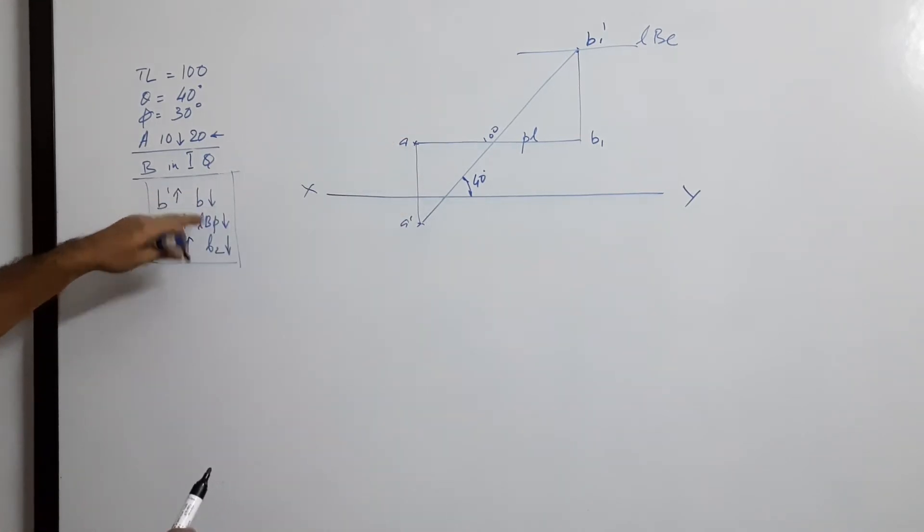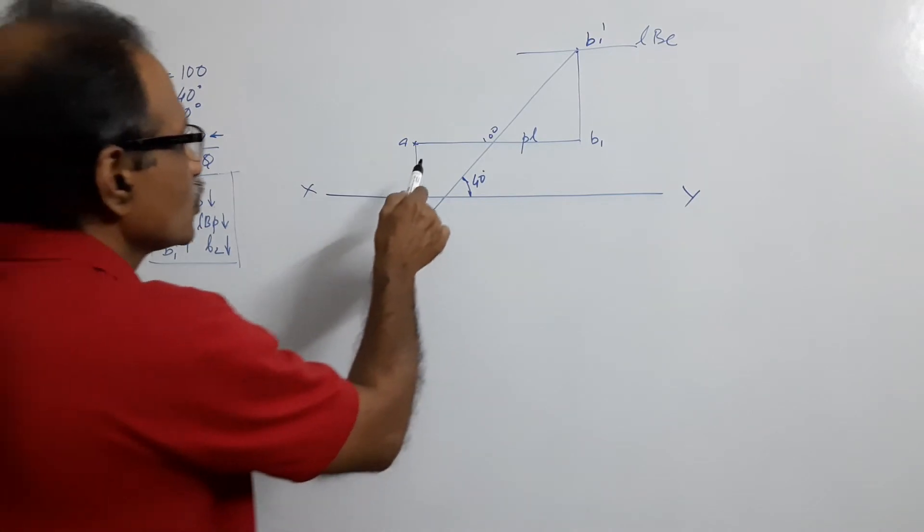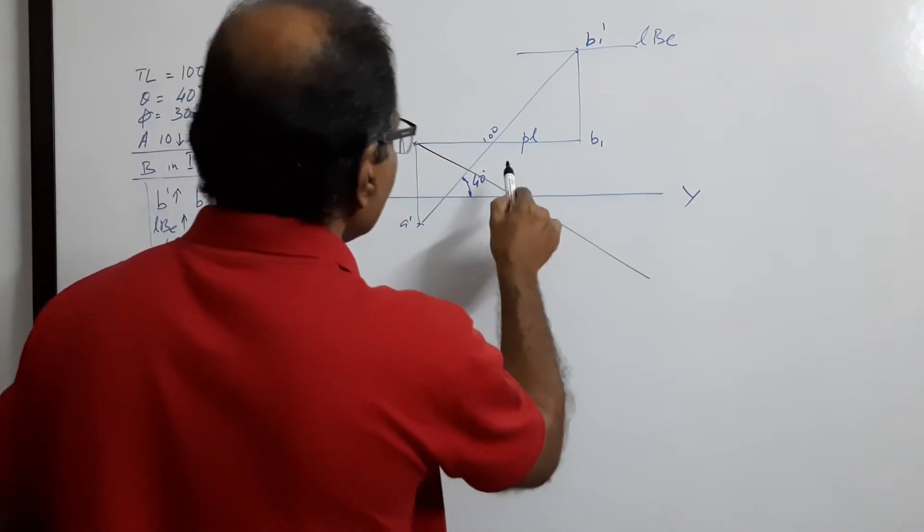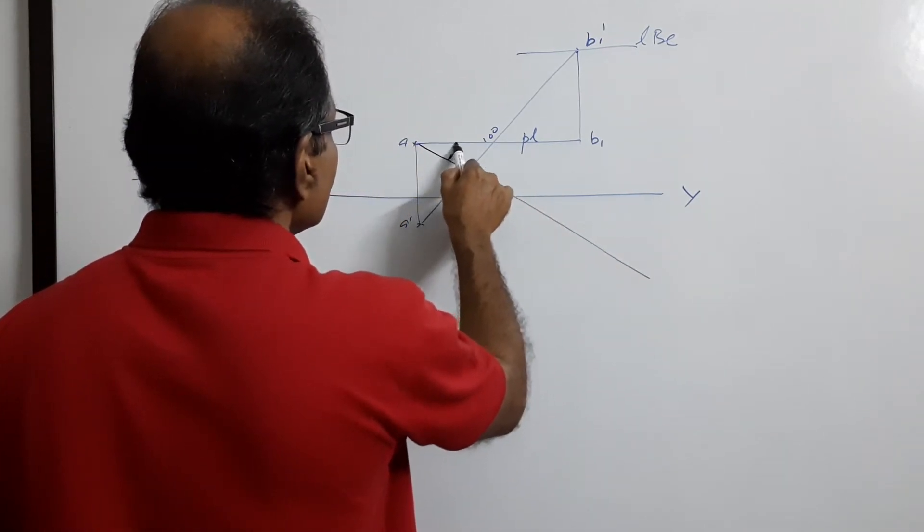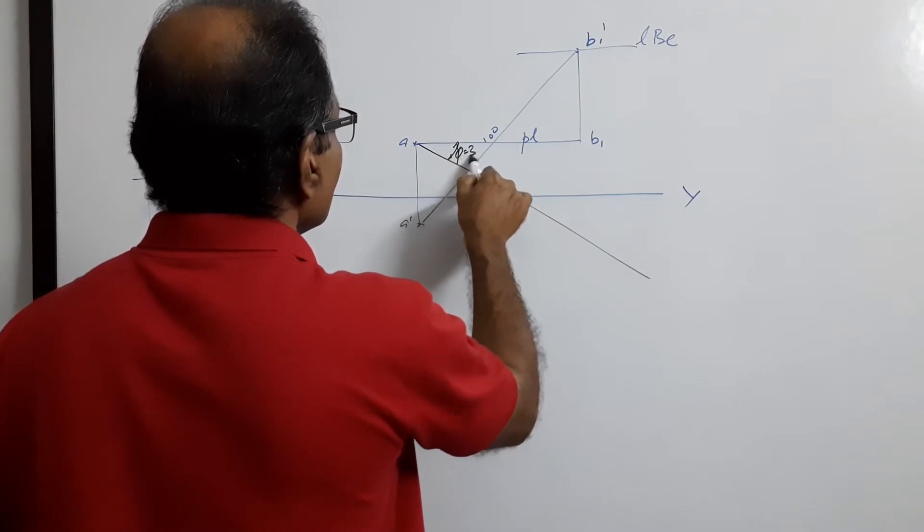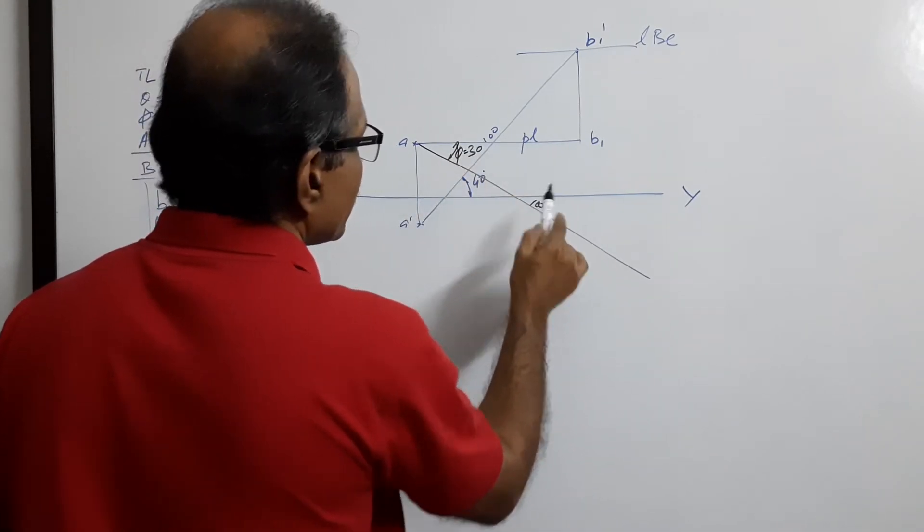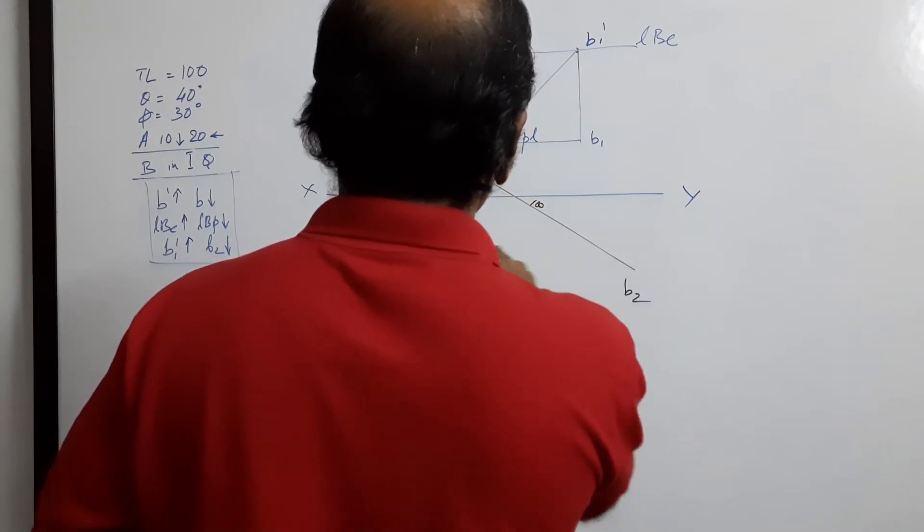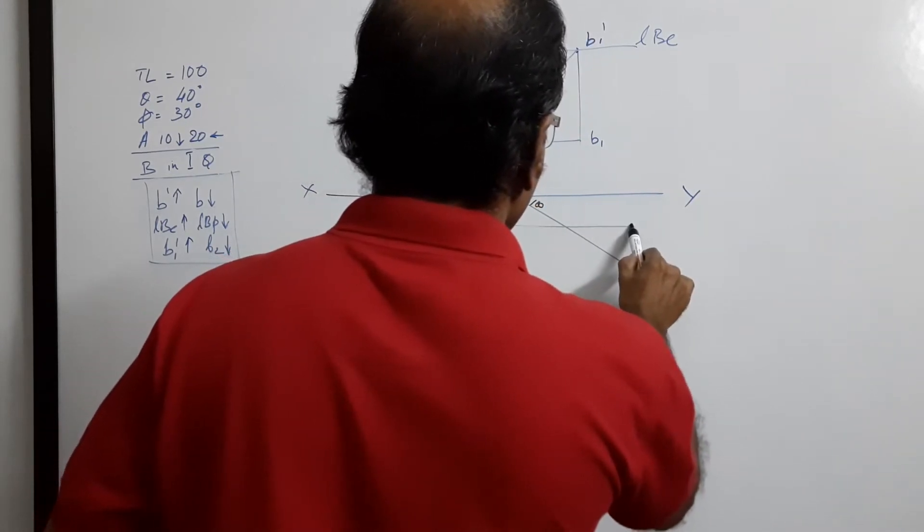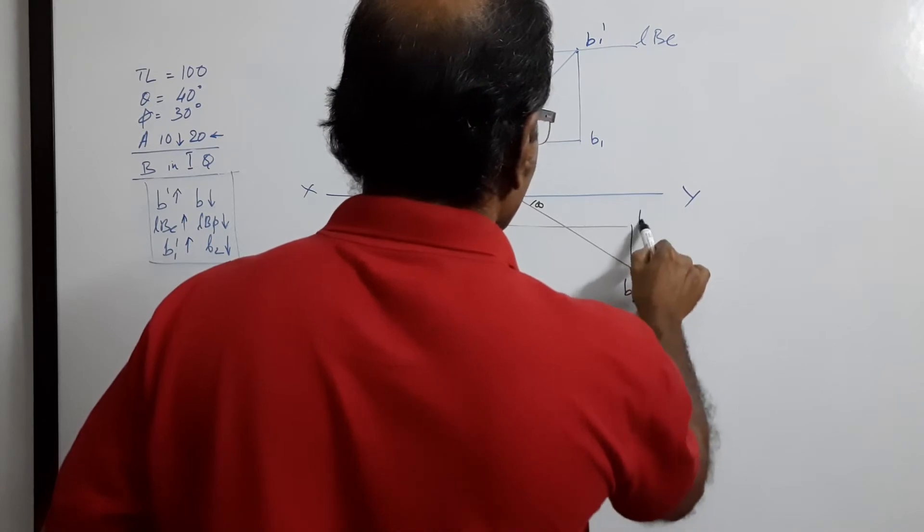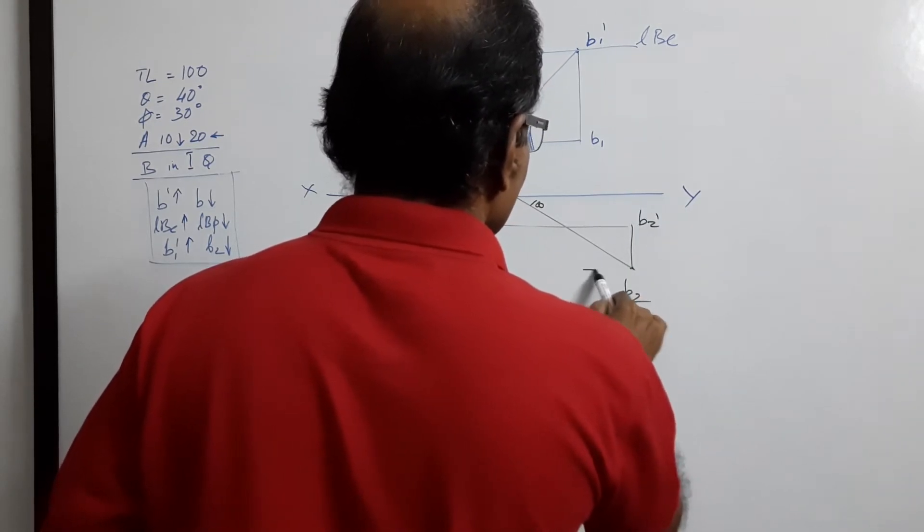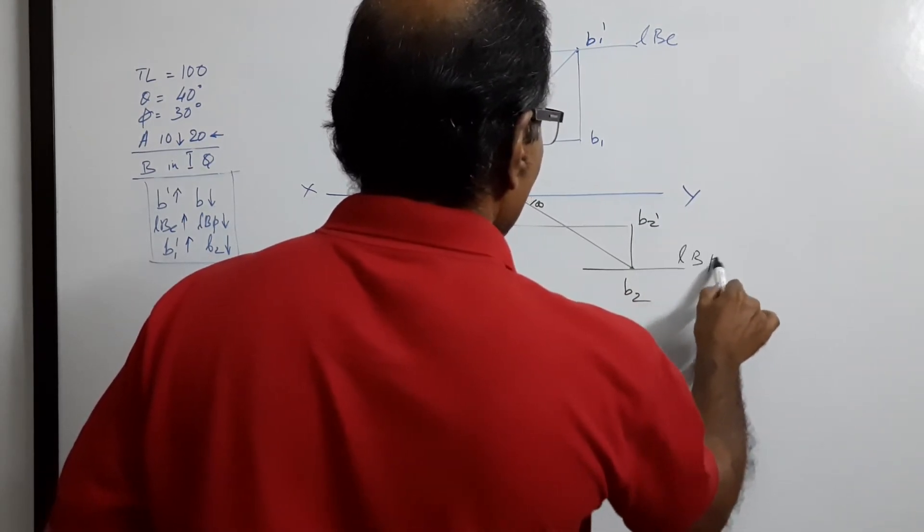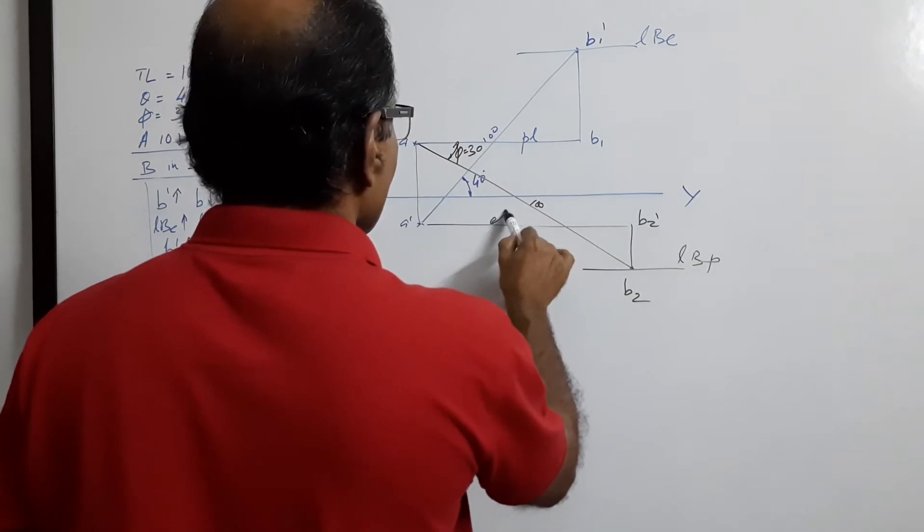Since B is down, LBP is down and B2 is down. Draw at 30 degrees. This is 100. Mark B2 and B2 dash to get LBP elevation length.